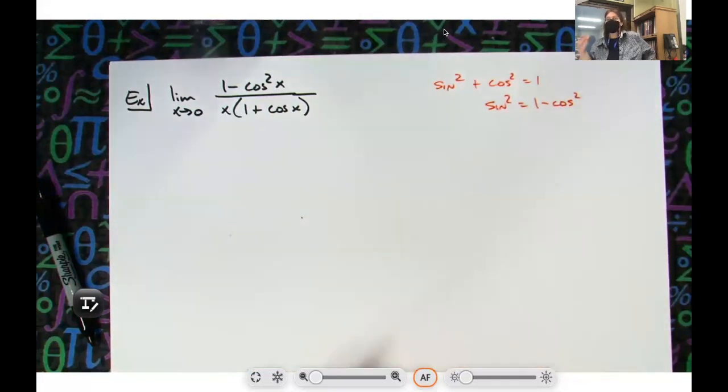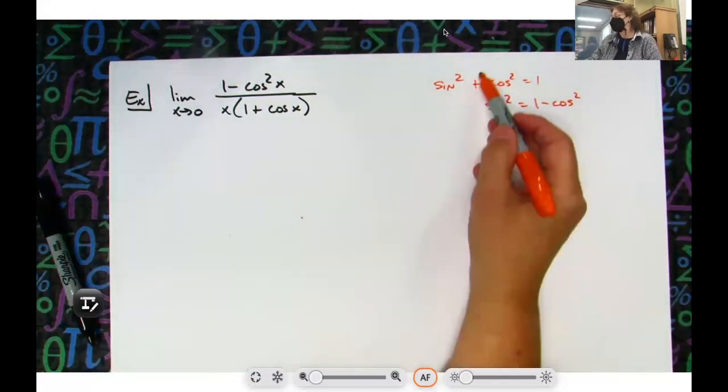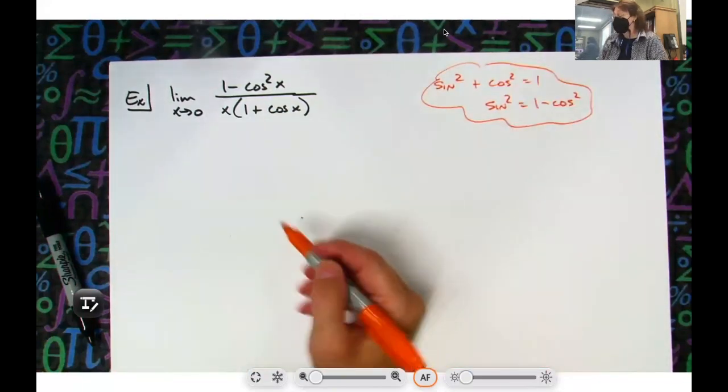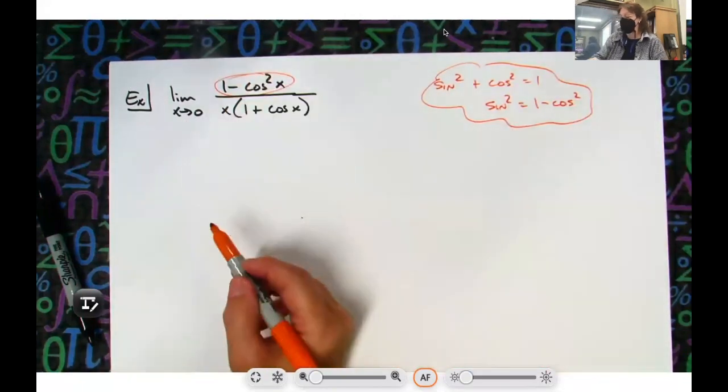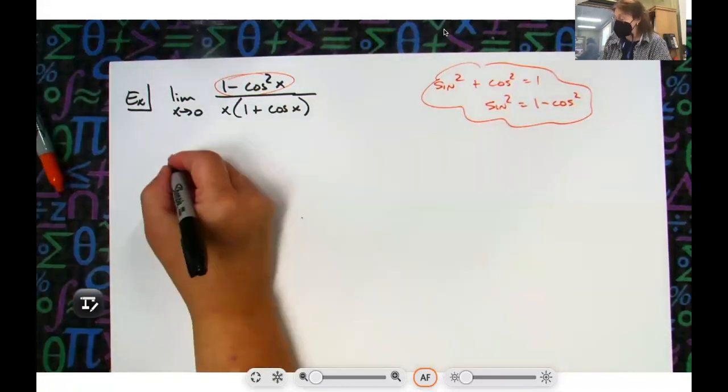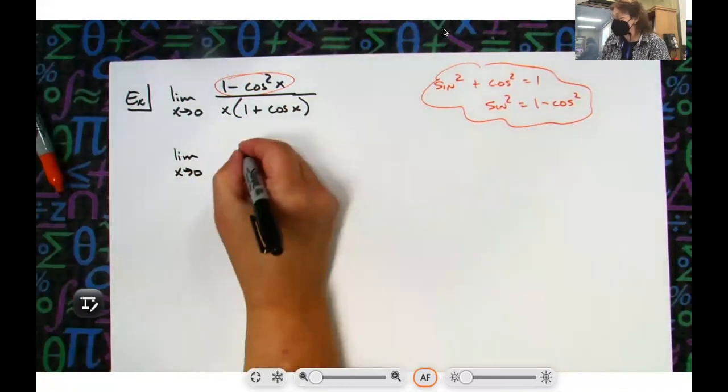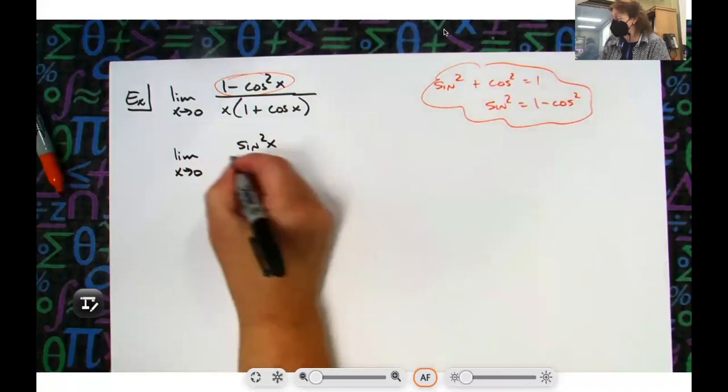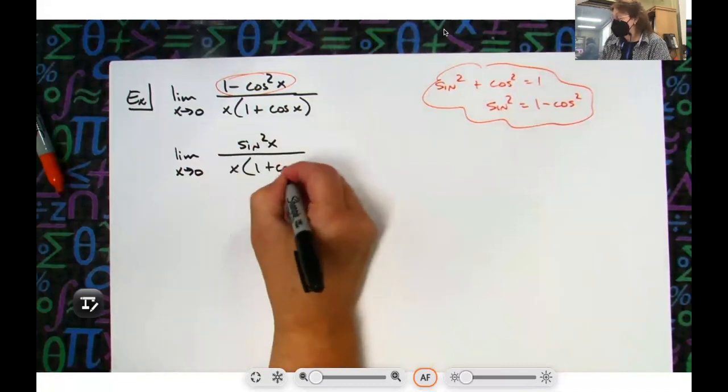All right, I'll leave the x's off because this is what you're thinking in your head. So I can make that substitution for that right there. So limit as x approaches 0, make the substitution sine squared x over 1 plus cosine x.